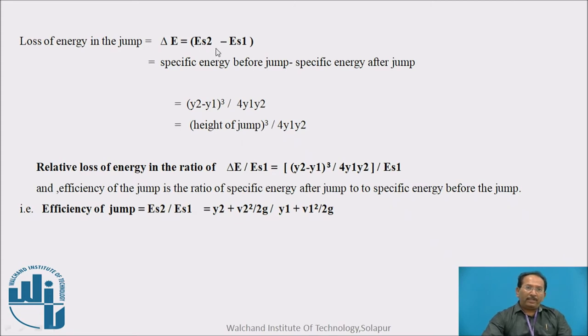Also, we can say it is a specific energy at section 2 minus specific energy at section 1. Y2 minus y1 is nothing but the height of the jump. So, height of the jump cube upon 4 y1 y2. Relative loss of energy is the ratio of loss of energy upon specific energy at 1. Efficiency of the jump is the ratio of specific energy after jump to the specific energy before jump. And we can write efficiency that is Es2 upon Es1, Es2 is specific energy. That is y2 plus v2 square upon 2g upon y1 plus v1 square upon 2g.